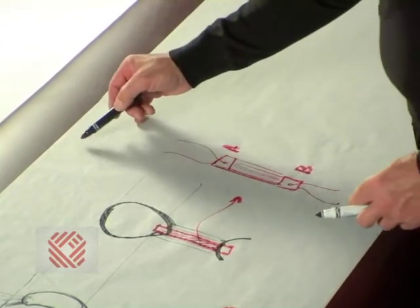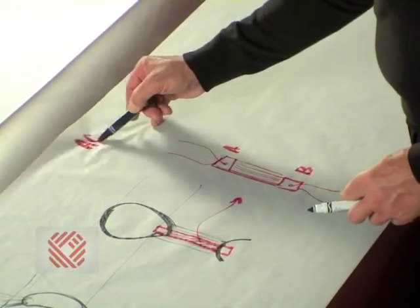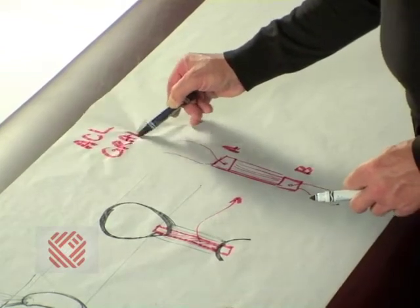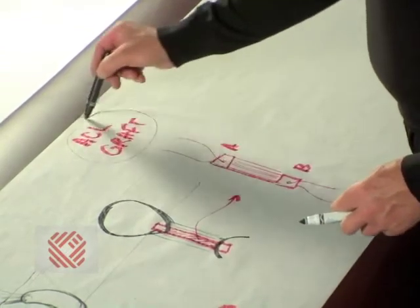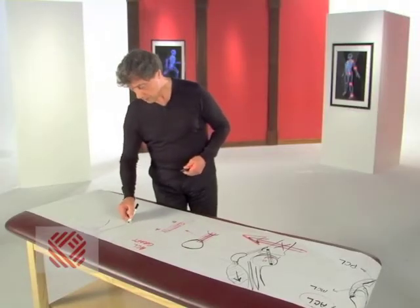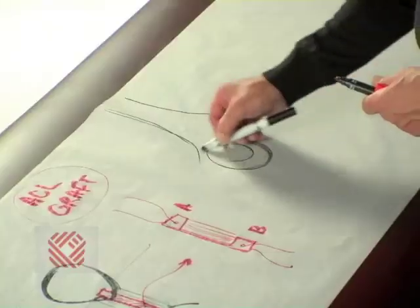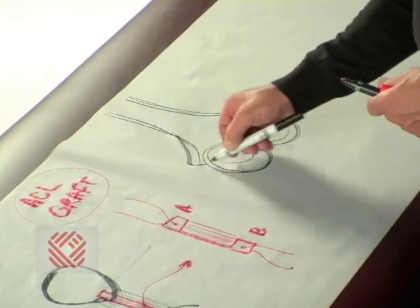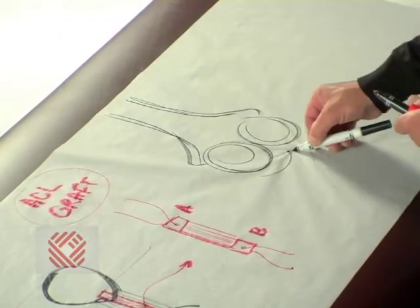Well, we now have our ACL graft. Let's look once again at the front view of the knee. Again, our thigh bone and top of our leg bone.